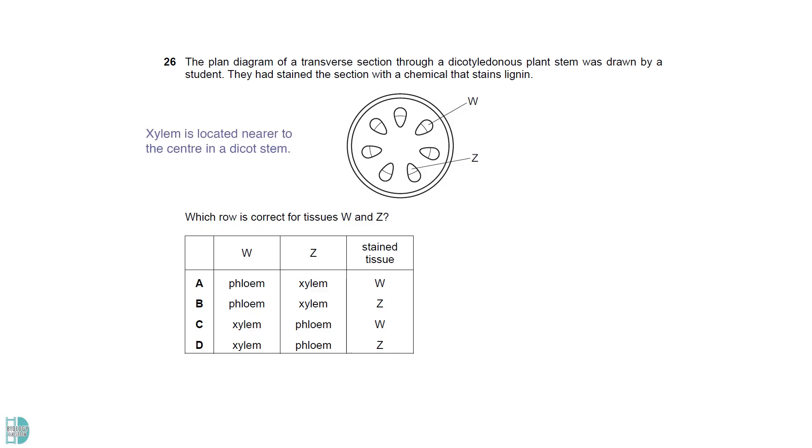Xylem is located near to the center in a dicot stem, so Z is the xylem and W is the phloem. The xylem would be stained as xylem vessels contain lignin in the cell wall. Cells in the phloem tissue do not contain lignin.